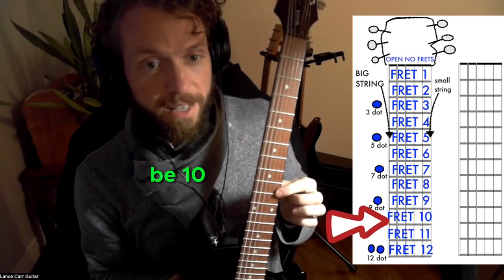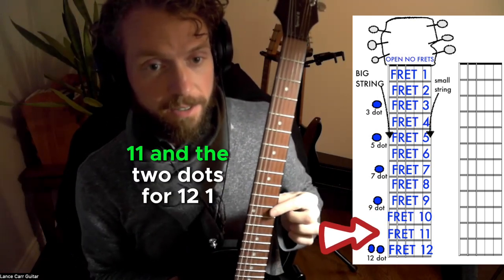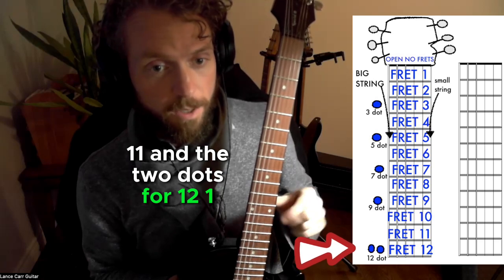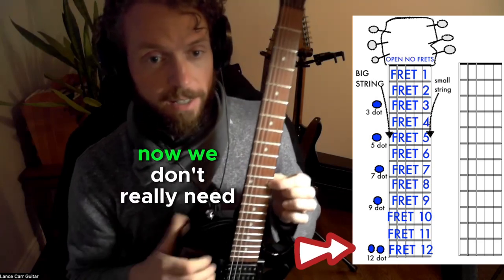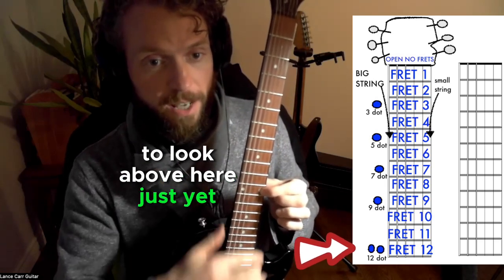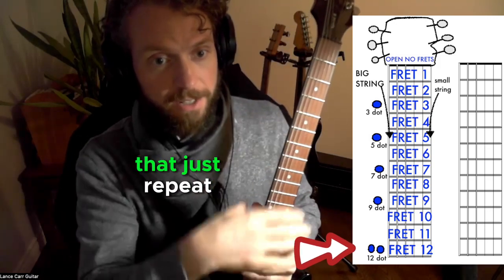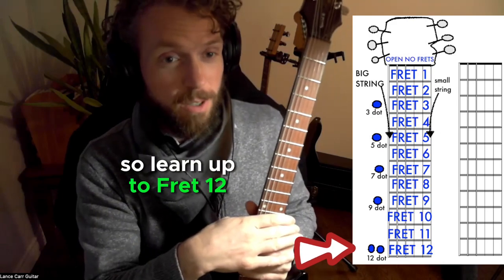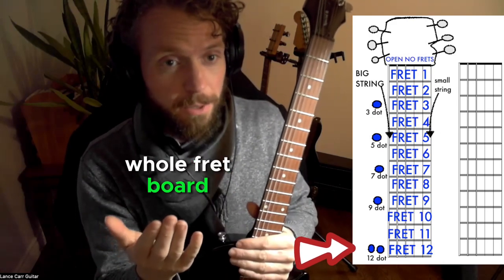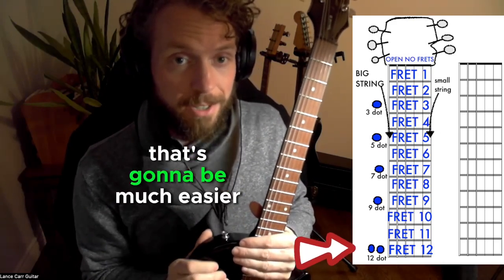Then the next metal fret would be ten, eleven, and the two dots for twelve. One, two is twelve. Now we don't really need to look above here just yet, because after fret twelve, it really just repeats. There's really only twelve notes that just repeat. So learn up to fret twelve, and you've essentially learned the whole fretboard. Or at least beyond that, it's going to be much easier.